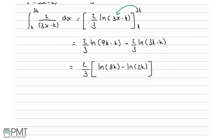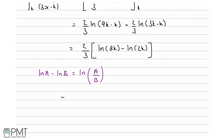Now we use the log rule that ln a minus ln b equals ln of a divided by b. So our integral ends up being 2 over 3 times the natural log of 8k divided by 2k, which equals 2 over 3 times the natural log of 4.